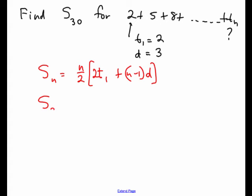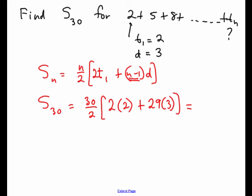The sum of 30 terms is 30 over 2, 2 times term 1 plus 30 minus 1, 29 jumps of how much, of 3, and crank that out, that'll work out to be 1365.